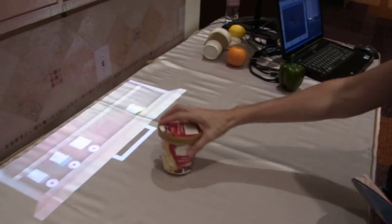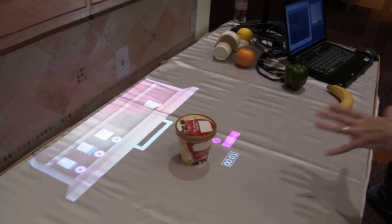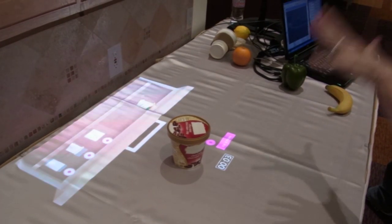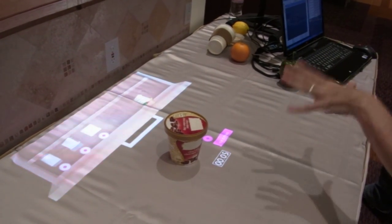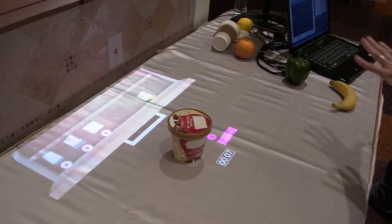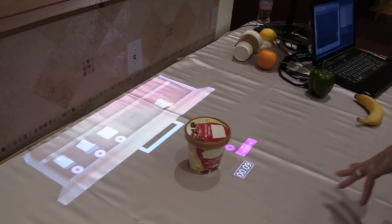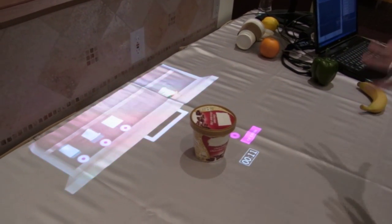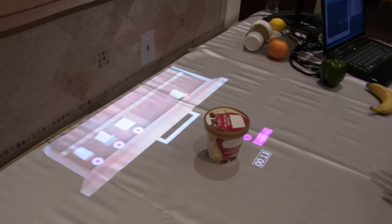We can also do automatic timers, so for something like ice cream or if you were thawing beef - we want to know what needs to go back in the fridge or freezer, so we can add a timer that will notify you automatically about something that needs to go back in the fridge or freezer.